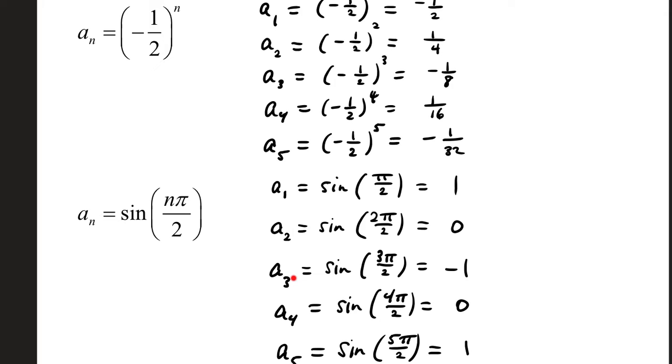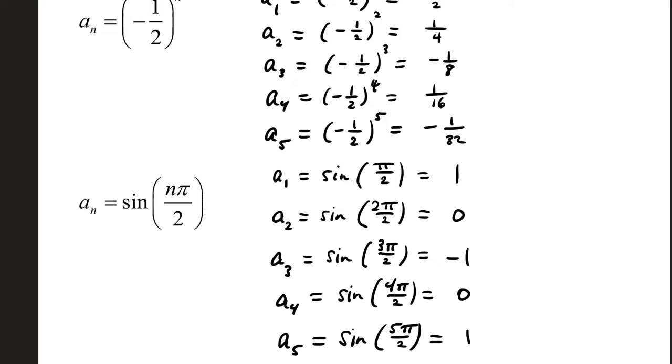a sub 3, sine of 3 times pi over 2 from your unit circle, that's negative 1. And you proceed with the same type of progression as you did in the first example. a sub 4, that's 4 pi over 2, which is 2 pi, sine of 2 pi is 0, and so forth.